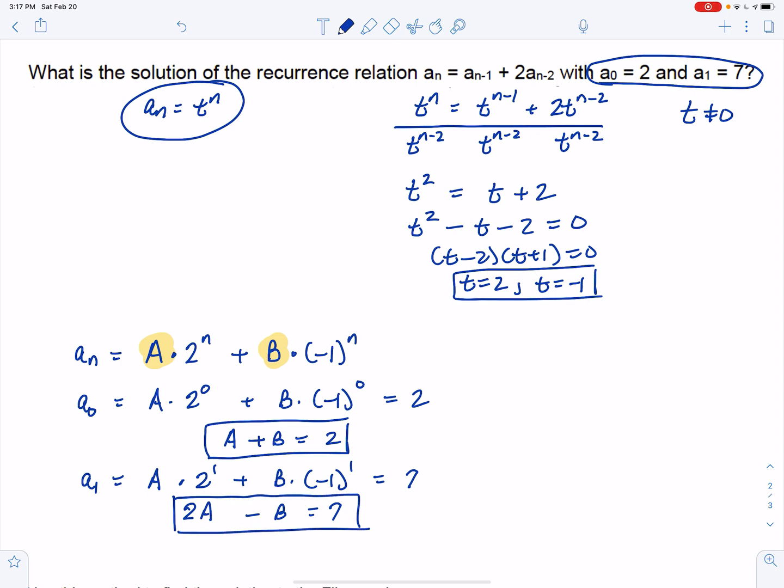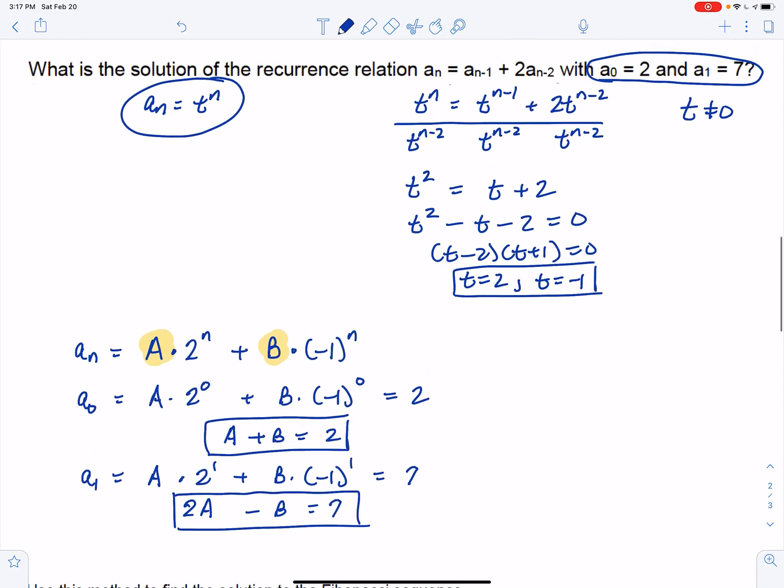So we can solve that by either elimination, substitution, whatever you want to do there. I'm just going to add the equations together because that gives us 3A equals 9, which means A equals 3. And if A equals 3 in this equation, that means B is equal to negative 1. We would get B equals negative 1 in the other equation, of course. So this means that a_n is equal to, now pull it all together, 3 times 2^n plus negative 1 times (-1)^n. And we can write that a little bit nicer. We can't really do much with 3 times 2^n, but we have negative 1 times (-1)^n, which we can write as (-1)^{n+1}. And that expression right there will tell us what each term is. So instead of using the recurrence, we can use the formula.